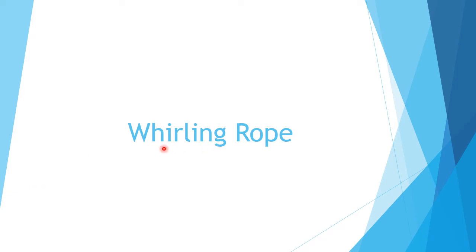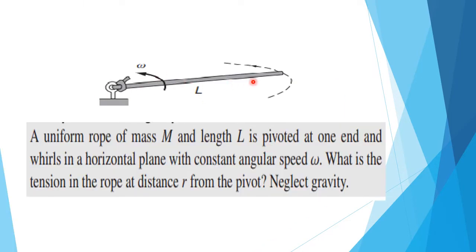Our next topic is a whirling rope or circling rope. This is a rope of length l and mass m. It is pivoted and fixed at one end, and it is whirled in a horizontal plane with a constant angular speed omega. Since it is whirling in a horizontal plane, we can neglect gravity. We have to find out the tension in the rope at distance r from the pivot.